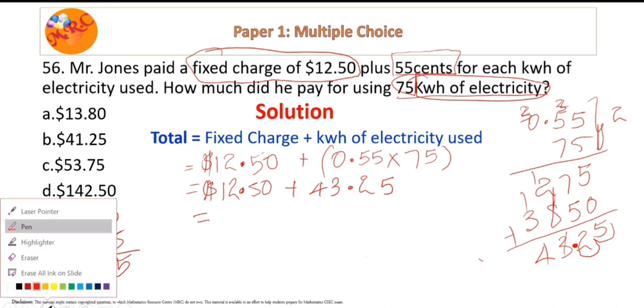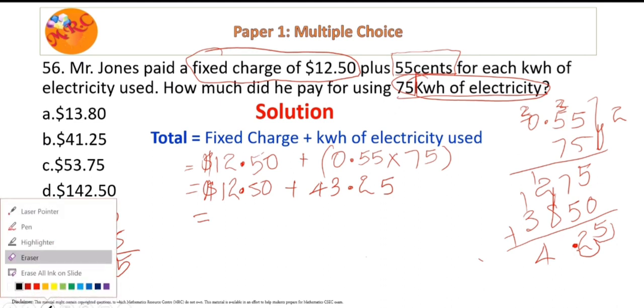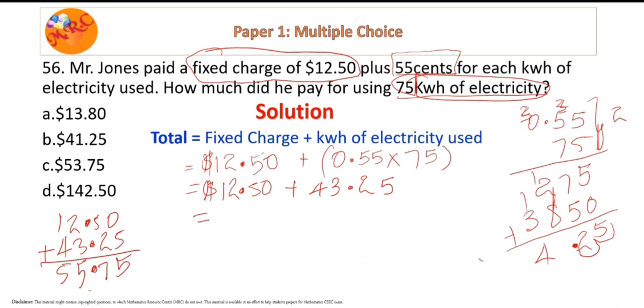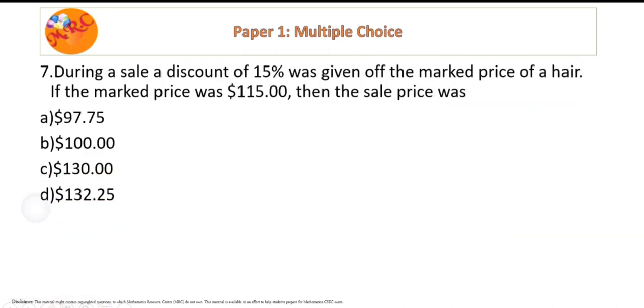All right, so 8 and 2 is 10, and 1 is 11. All right. And it's okay.